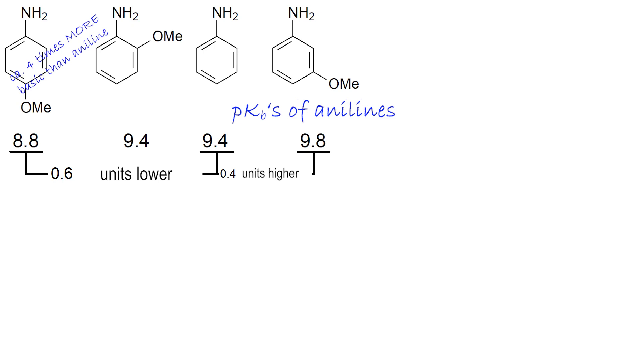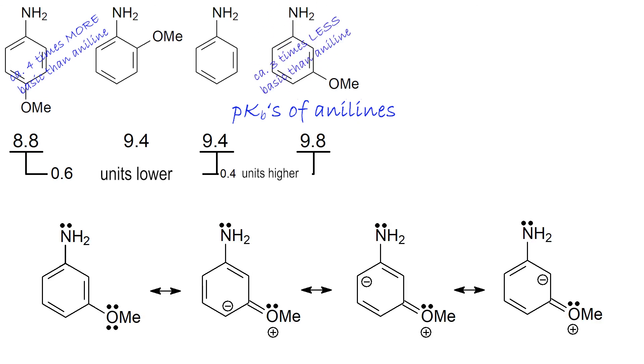Metamethoxy aniline is even less basic than aniline, by meagre 0.4 pKb units or 3 times, because at that position the O-methyl group cannot directly affect the NH2 group by resonance, but can still withdraw some electron density by electron-withdrawing inductive effect, as a consequence of oxygen's high electronegativity.